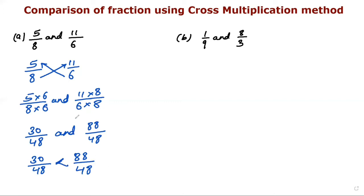So we can say that 5/8 is the smaller fraction. Next, let's compare 1/9 and 8/3. I'm giving this cross multiplication sign.